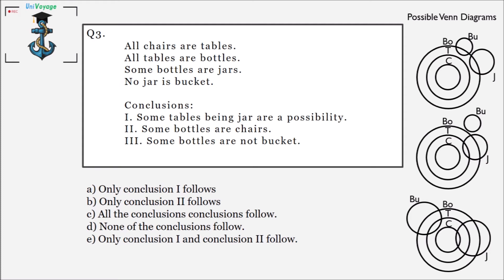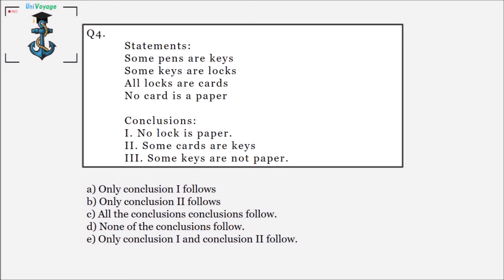The next conclusion is 'some bottles are chairs,' which is straightforward since all chairs are tables and all tables are bottles, so some bottles are chairs — as covered in the first slide on important concepts. The third conclusion, 'some bottles are not buckets,' follows from combining the statements 'some bottles are jars' and 'no jar is a bucket.' All three conclusions are true, so the answer is option C — all conclusions follow.